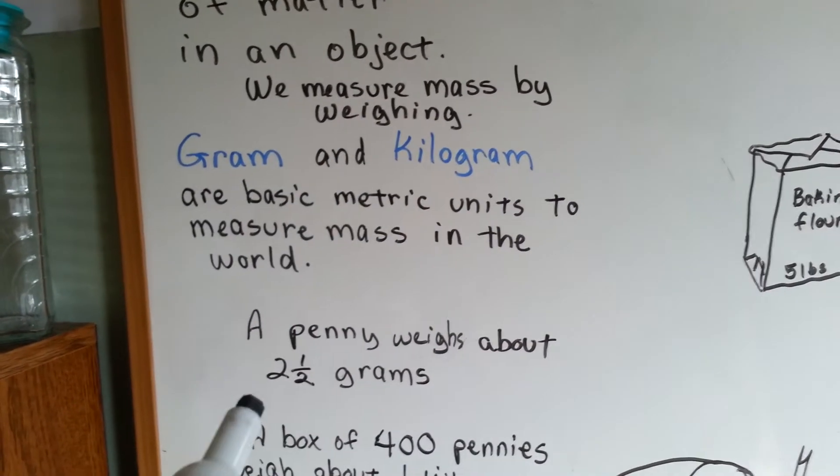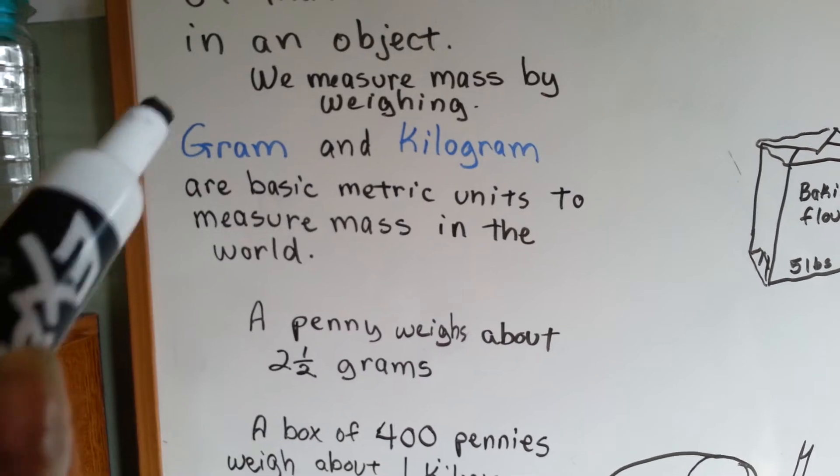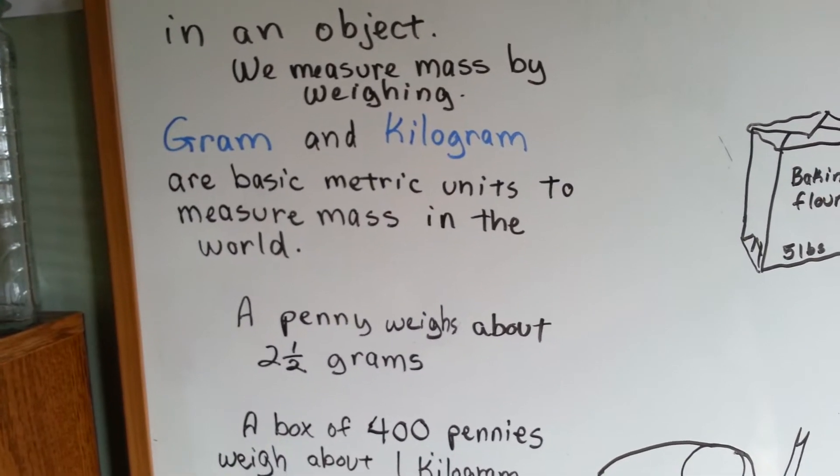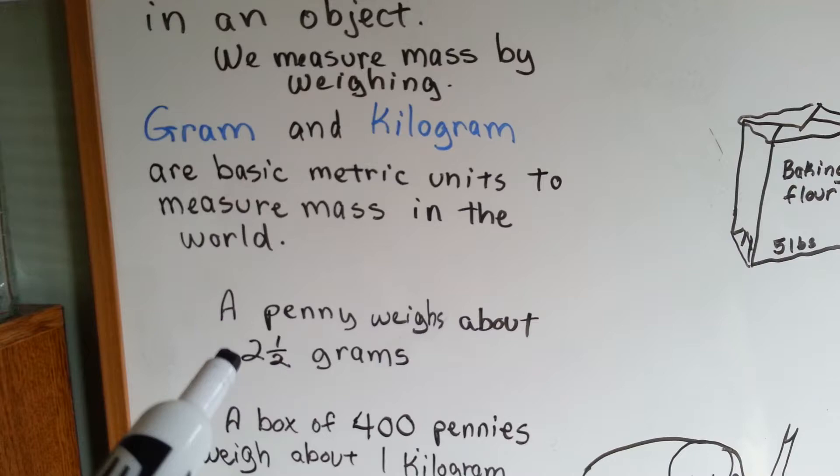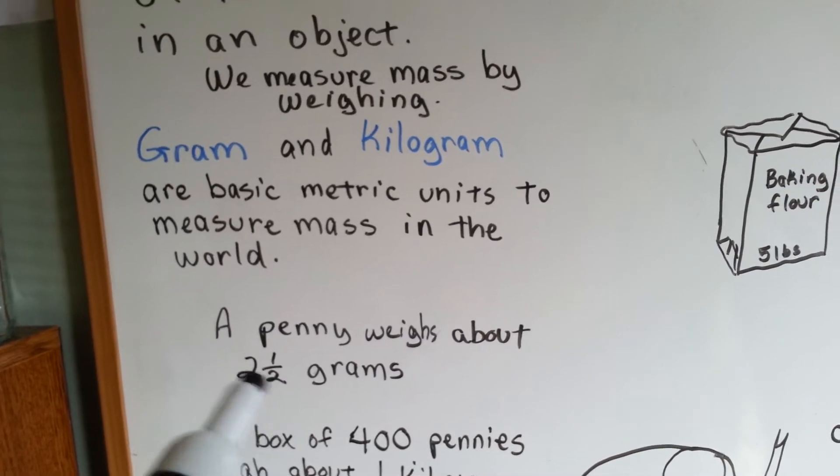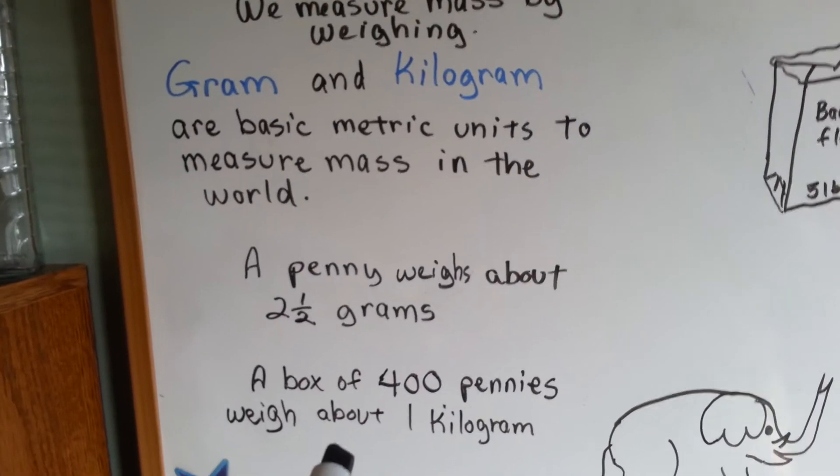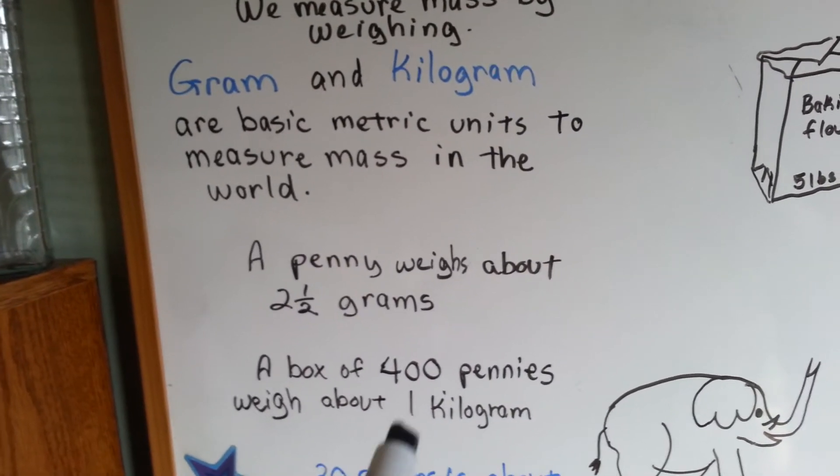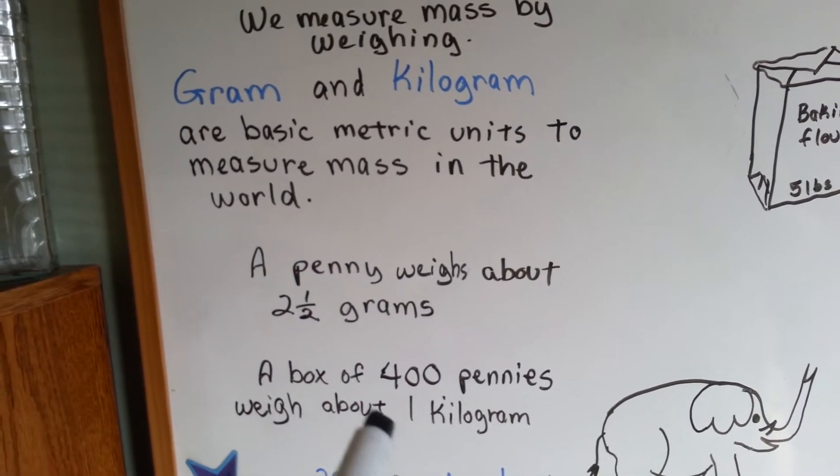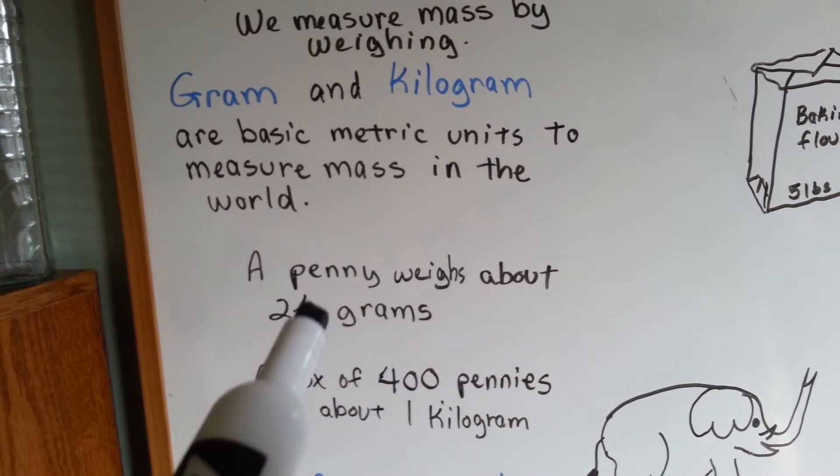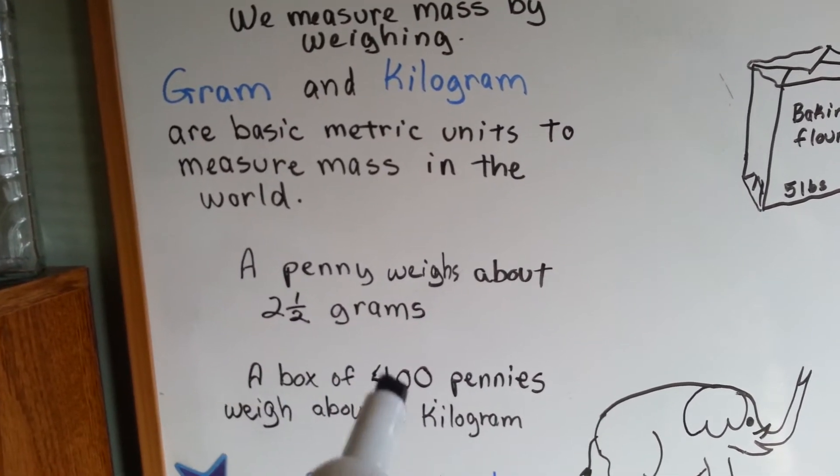A penny weighs about two and a half grams. So that will give you an idea of how much a gram is. One little Lincoln penny is about two and a half grams, not the copper ones, the zinc ones. A box of 400 pennies weighs about one kilogram. So you can see that a kilogram is a lot bigger than a gram, because that's 400 pennies.